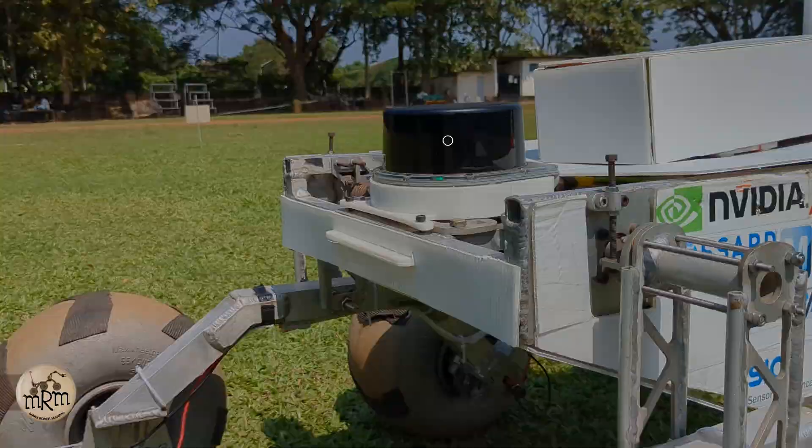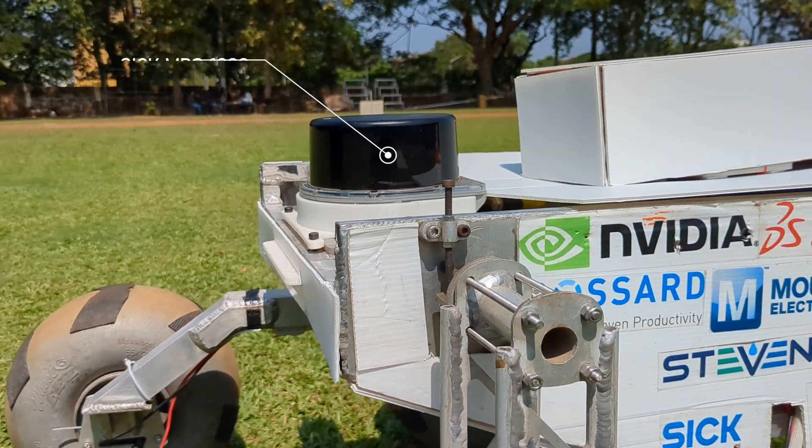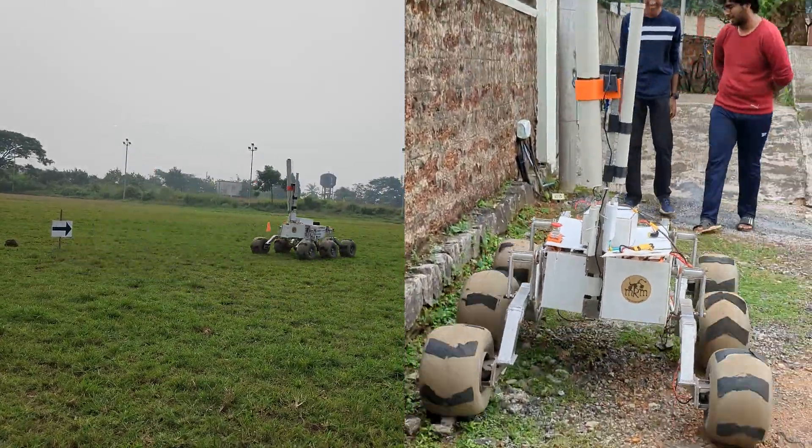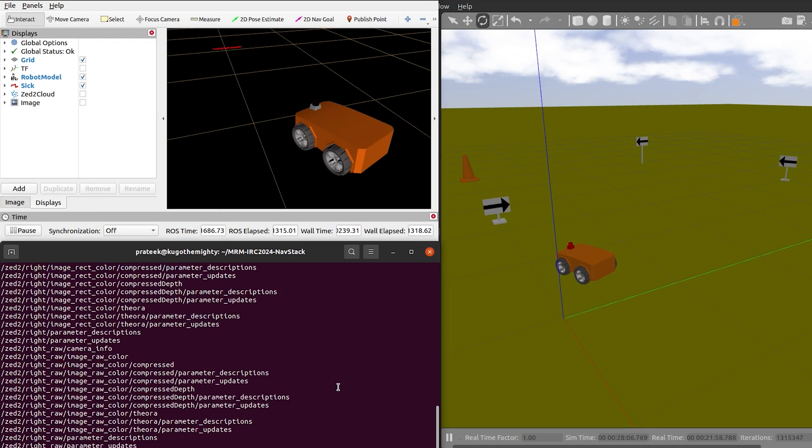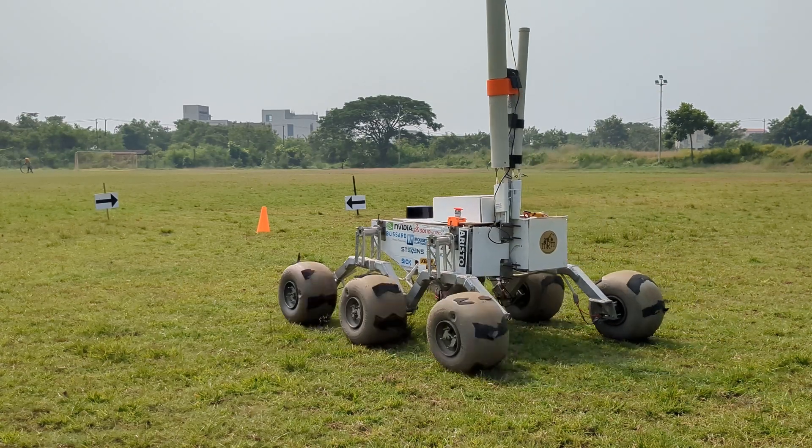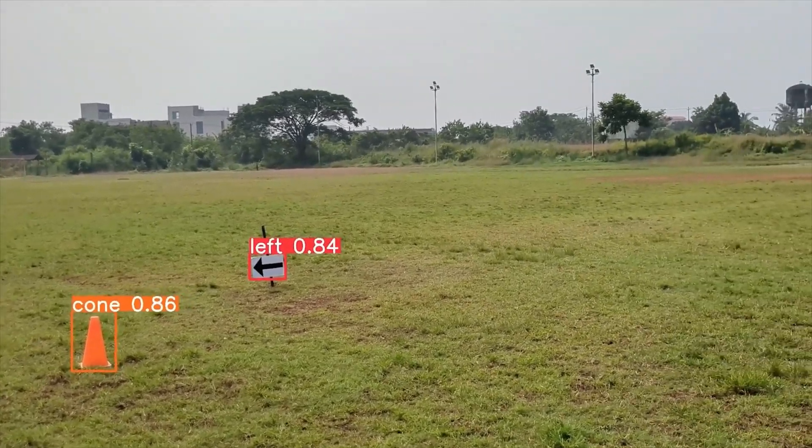For the autonomous expedition, the 6-MRS LiDAR plays a pivotal role as one of the perception sensors used for trajectory planning and obstacle avoidance. ROS serves as a central framework integrating all onboard sensors with the Jetson Xavier NX. A YOLO V8 model trained on an extensive dataset ensures precise detection of arrows and cones.